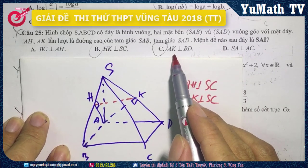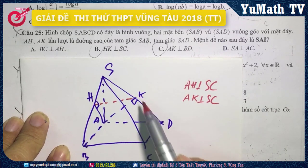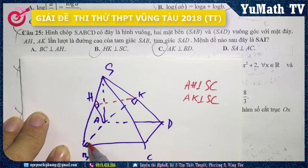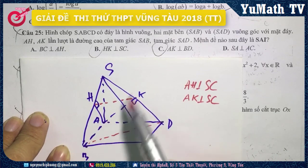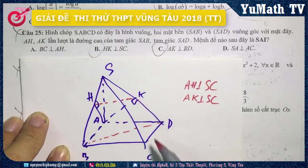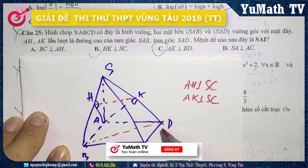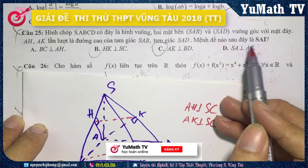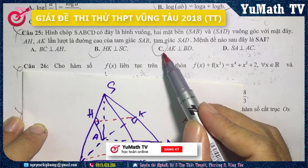Đáp án C: AK vuông góc với BD. Chứng minh tương tự như câu A thì AK sẽ vuông góc với CD chứ không thể vuông góc với BD. Như vậy mệnh đề C là sai. Mình chọn đáp án C.